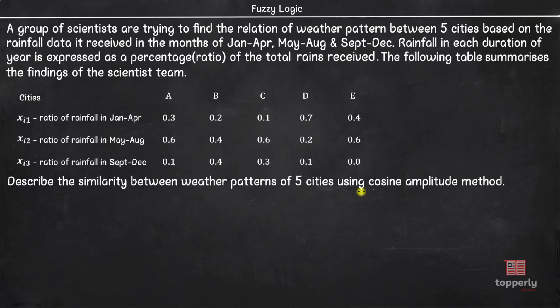We are asked to determine the similarity between weather patterns of 5 cities using cosine amplitude method. So here you can find that we are trying to find similarity between 5 cities. Hence, n equals 5. Now, each of the city - city A, city B, city C, city D and city E - are described by three properties: rainfall in January to April, rainfall in May to August and rainfall in September to December. Since each city is described by three properties, we have m here equal to 3.